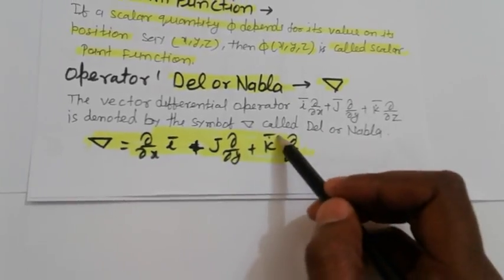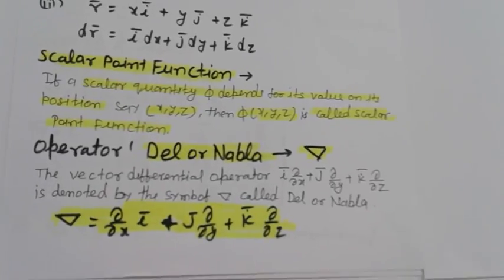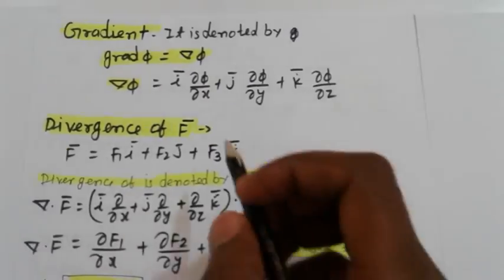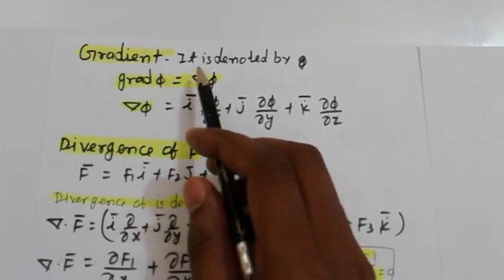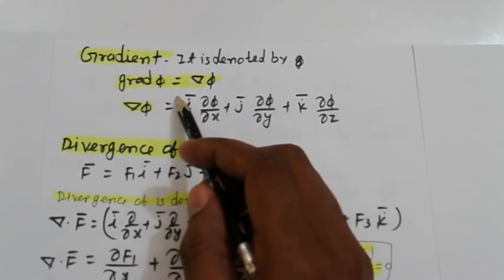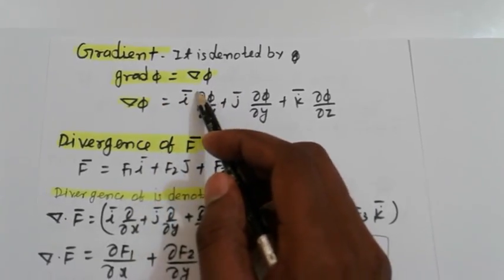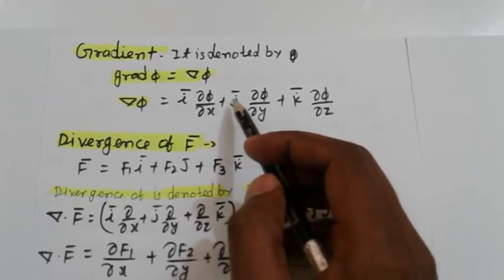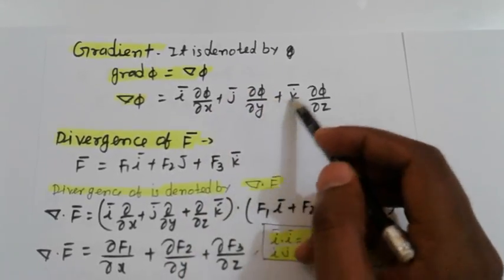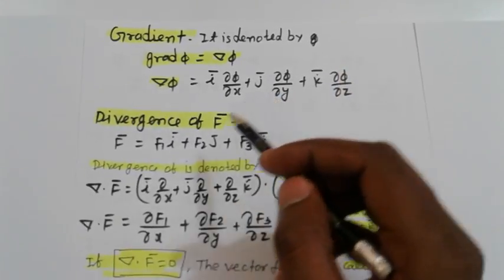Gradient: it is denoted by grad(phi) or nabla·phi. This is equal to i(∂phi/∂x) + j(∂phi/∂y) + k(∂phi/∂z), where phi is a function of x, y, z.